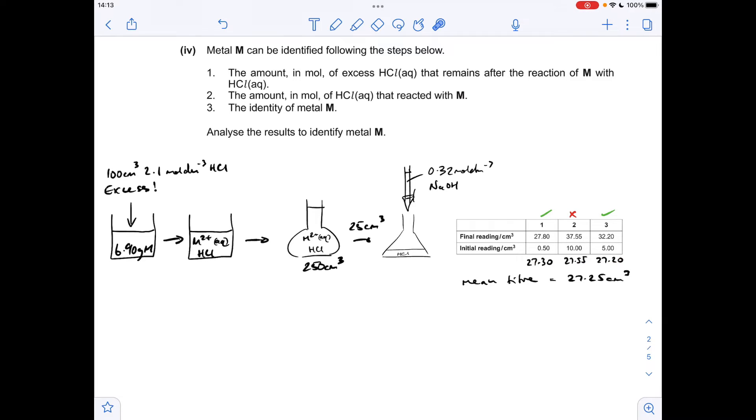So there's the three titers. Obviously, 1 and 3 are concordant because they're within 0.10 of each other. That's too far away, so we're going to ignore number 2. So that makes the mean titer 27.25 cm cubed. That means the moles of sodium hydroxide, concentration times volume in decimeters cubed, is coming out at 0.00872 moles, which means that the moles of HCl in the 25 cm cubed for the titration is the same because there's a one-to-one ratio between the sodium hydroxide and HCl.